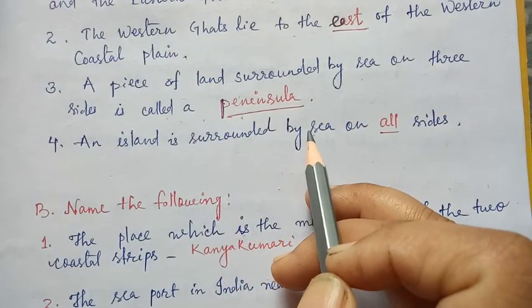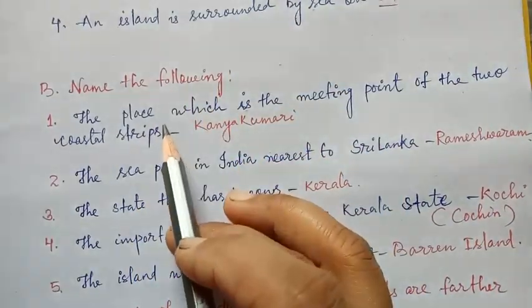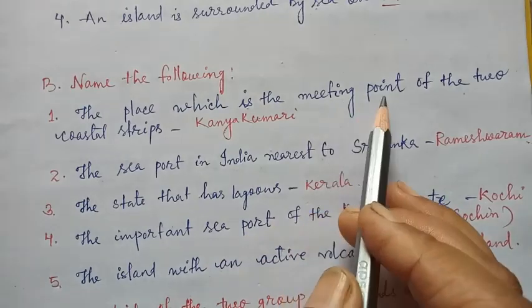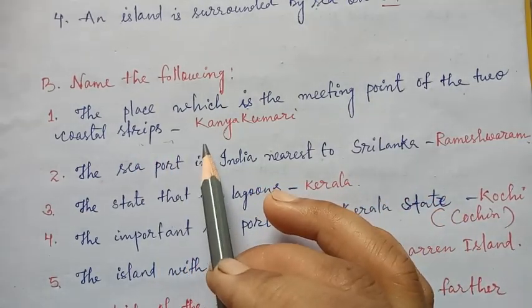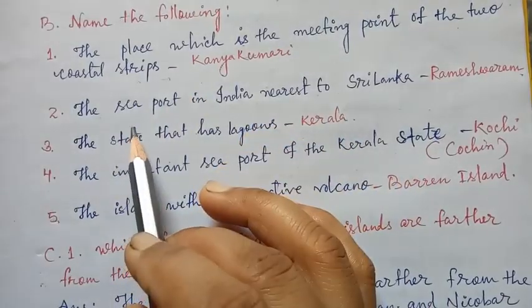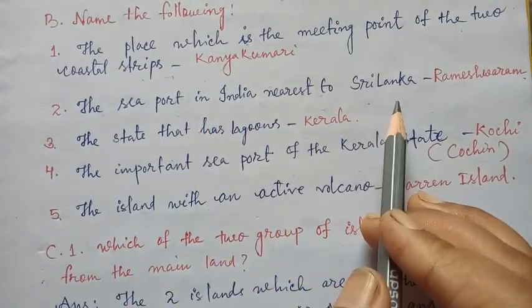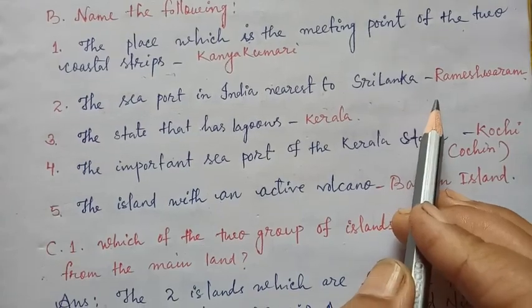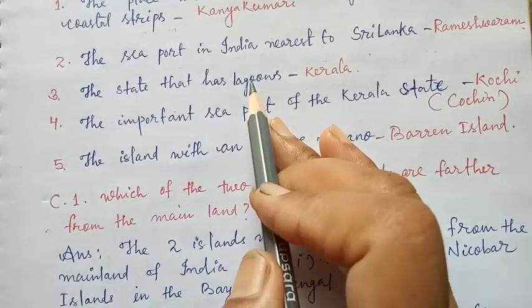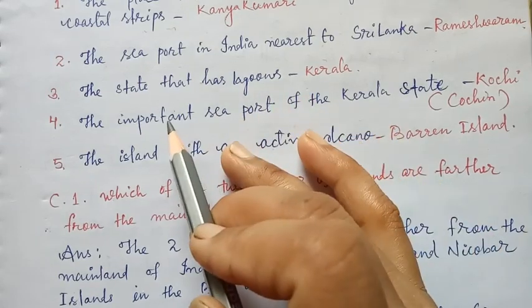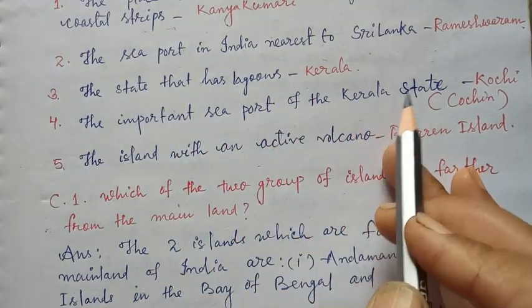An island is surrounded by sea on all sides. Next, name the following: the place which is the meeting point of the two coastal strips — that is Kanyakumari. The sea port in India nearest to Sri Lanka is Rameswaram. The state that has lagoons is Kerala, and the important sea port of Kerala is Kochi.